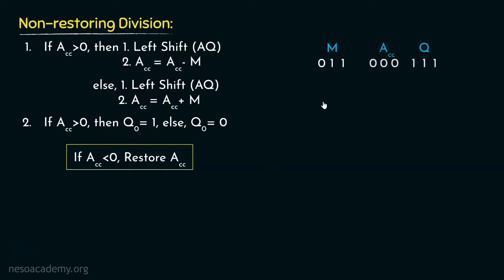So we are going to have the same setup: the M register is going to include 011, that is 3. The accumulator is going to be initialized with zeros. And the content of the Q register will be 111, that is 7 — the dividend. Alongside these, we are going to have the count register as well, which will store the number of bits inside the dividend, which is 3 in this case. So let's begin the process.